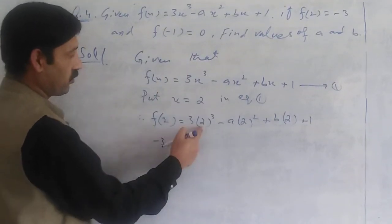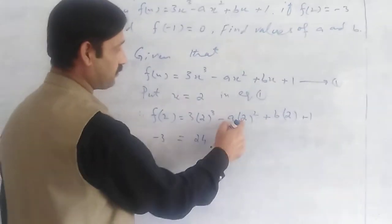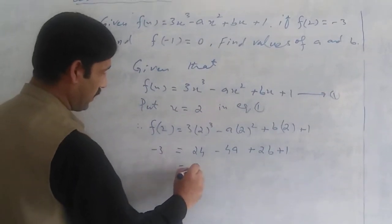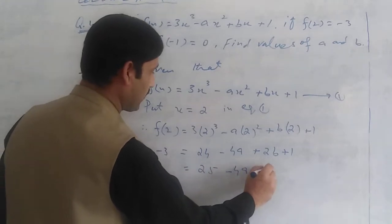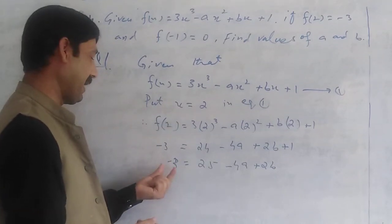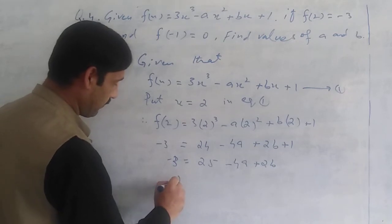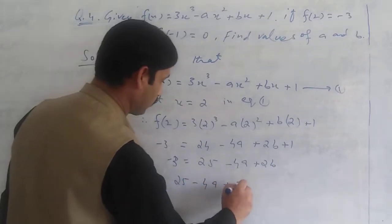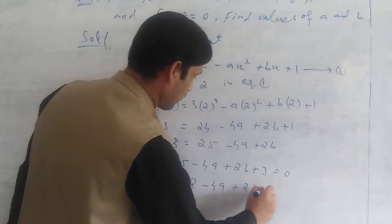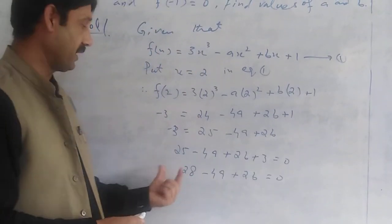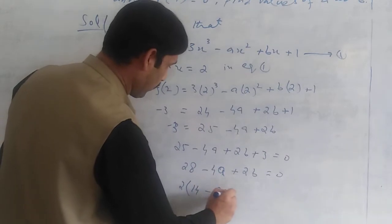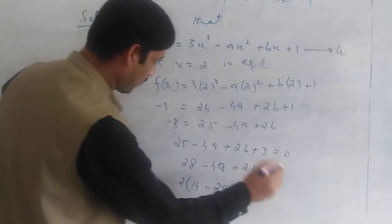We get 24 minus 4a plus 2b plus 1. This is 25 minus 4a plus 2b equals minus 3. Simplifying, we can say that adding 3 on both sides, 25 minus 4a plus 2b equals 0, which becomes 28. We can divide by 2: 14 minus 2a plus b equals 0. This is equation number 2.